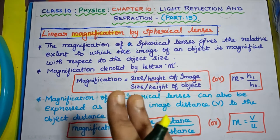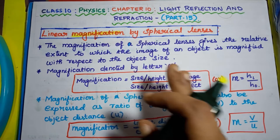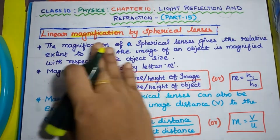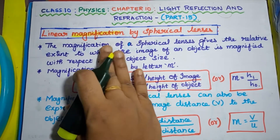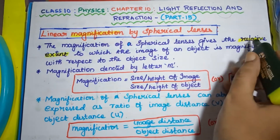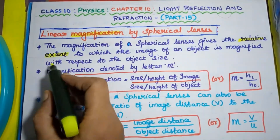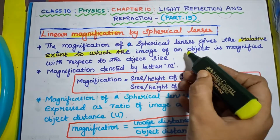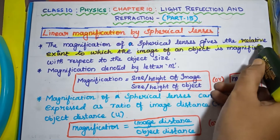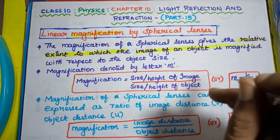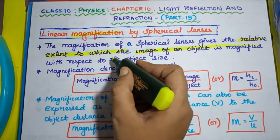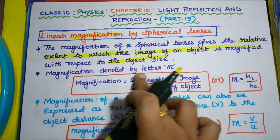For our understanding, let's read the definition of magnification by spherical lenses. The magnification of spherical lenses gives the relative extent to which the image of an object is magnified — that is, comparing the size of the image with respect to the object size.